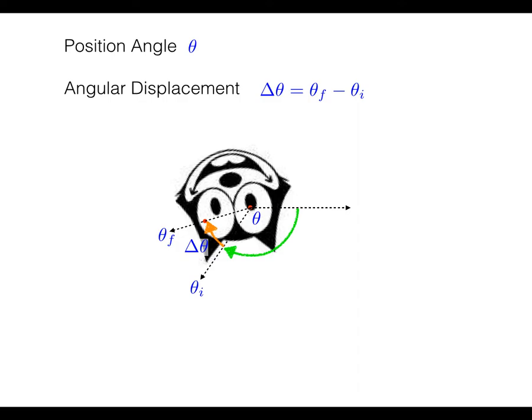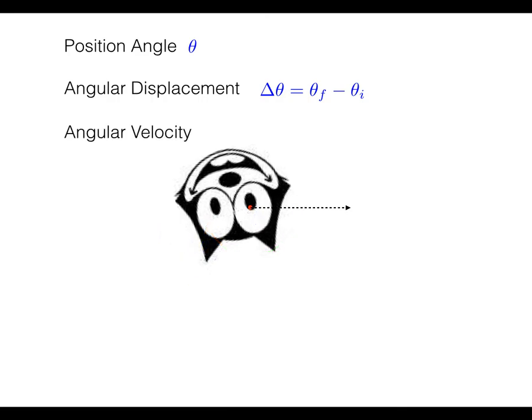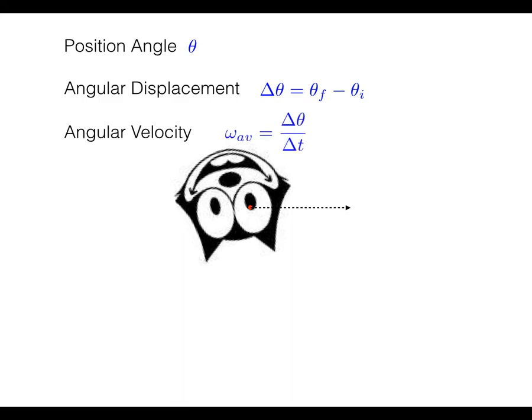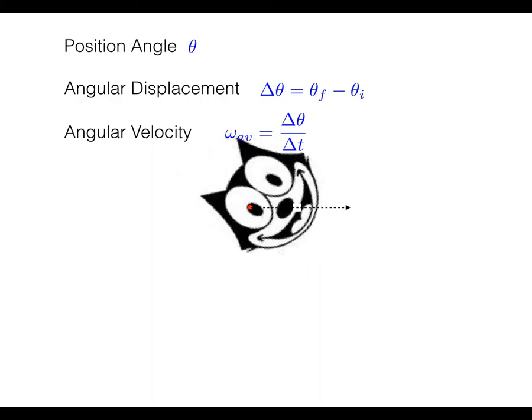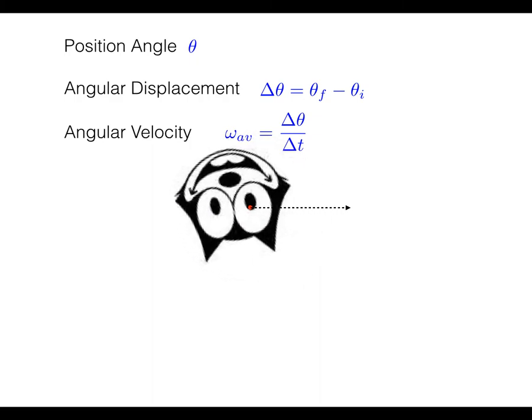What else did we define when we were talking about linear motion? Well, we defined velocity, right? So what would angular velocity look like? Well, you might not be surprised to hear that the average angular velocity is going to be the change in theta over change in time. So you can just figure out how much angle that cat head passes through in a certain period of time. Divide delta theta by delta t and you'll get average angular velocity.